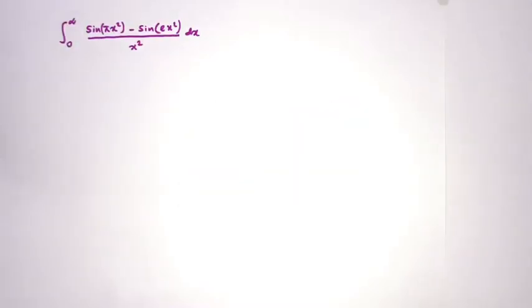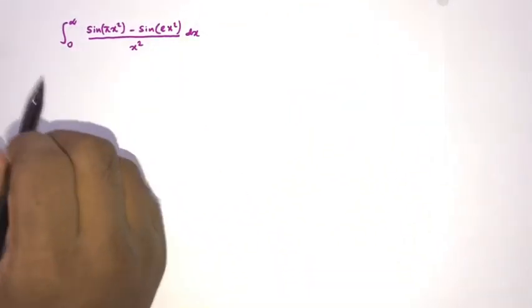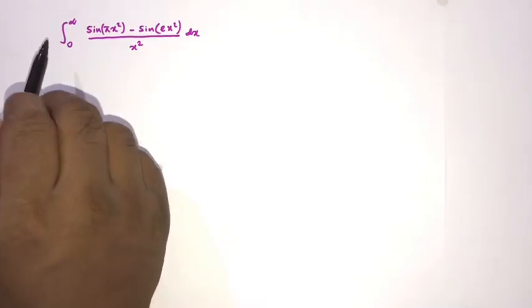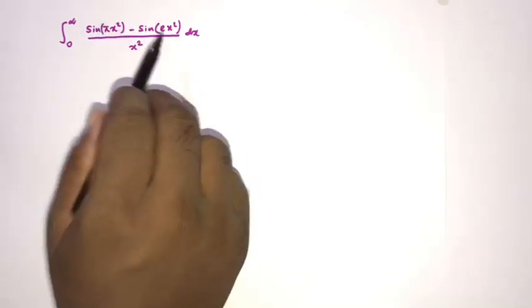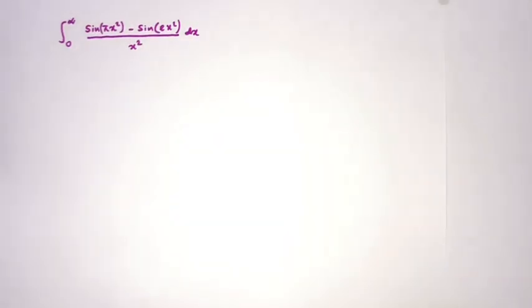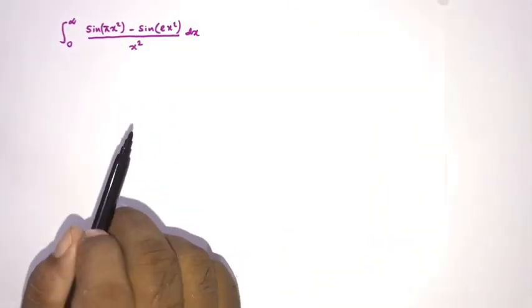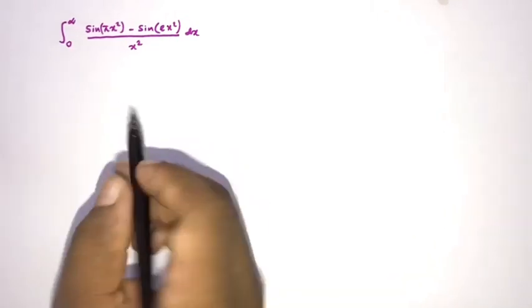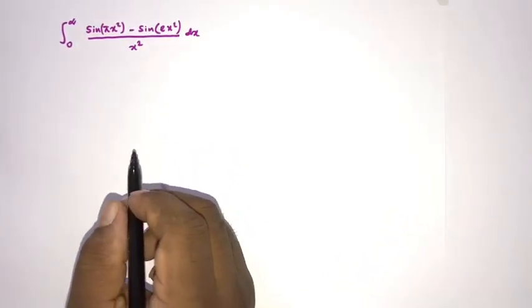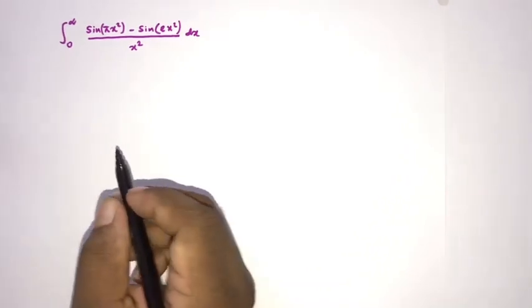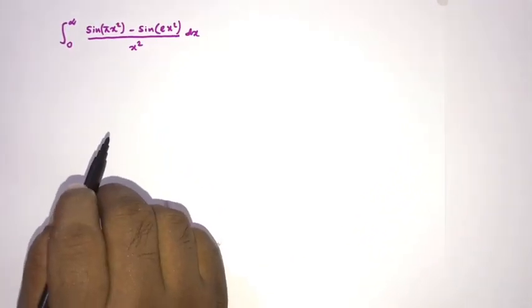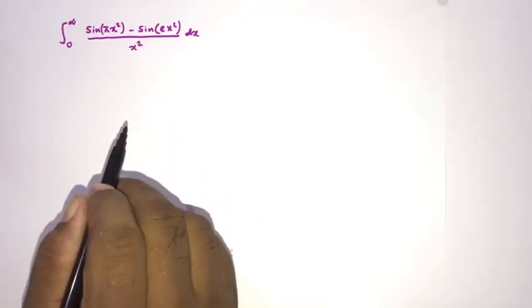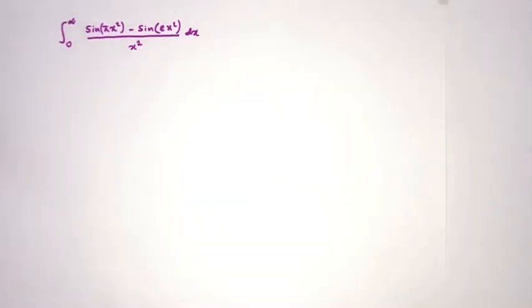Welcome to the Mathematics channel. In this video we are going to solve this interesting integral: the integral from zero to infinity of sine of pi x squared minus sine of x squared, all over x squared, with respect to x. At first glance I thought the Fresnel integral would be involved. In this video I am going to solve this integral by using the method of differentiation under the integral sign.